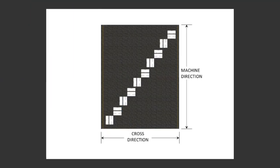A sample submitted without a roll number will not be tested. In the lab, test samples are cut from the material in the machine direction and the cross direction, across the width of the roll. These samples are tested for strength and elongation. Remember, the sample must pass testing before being installed.